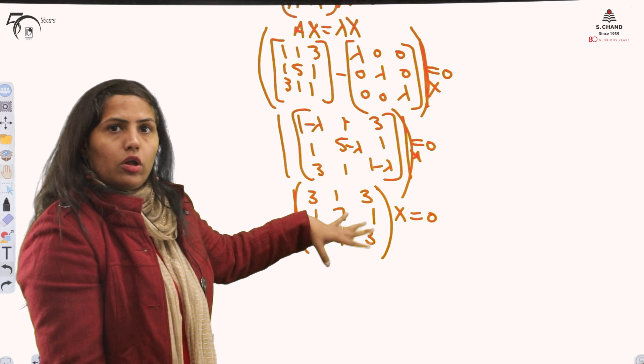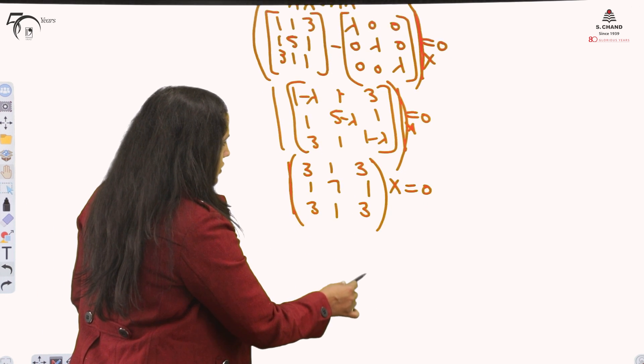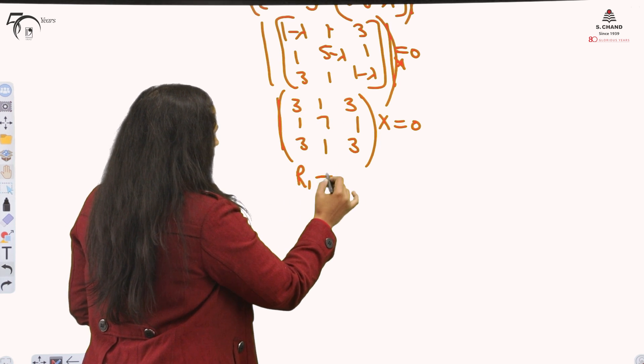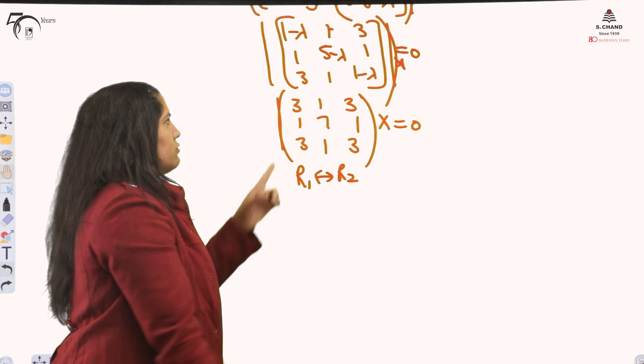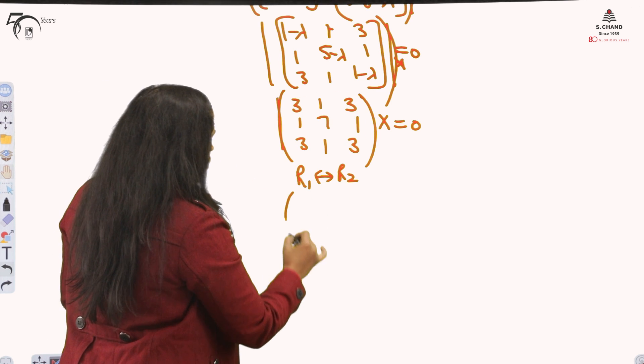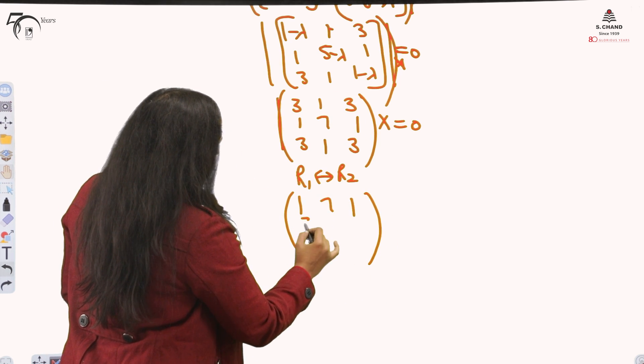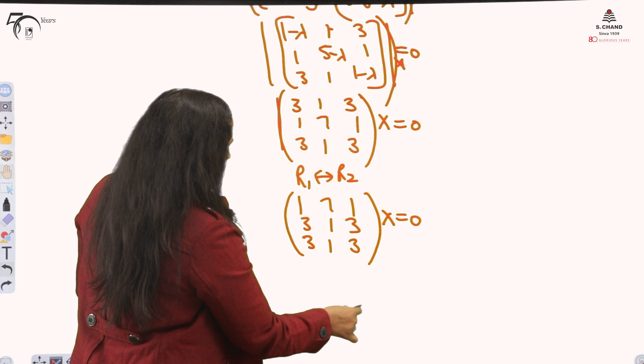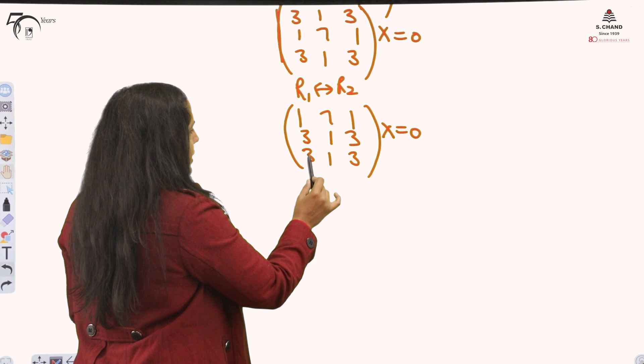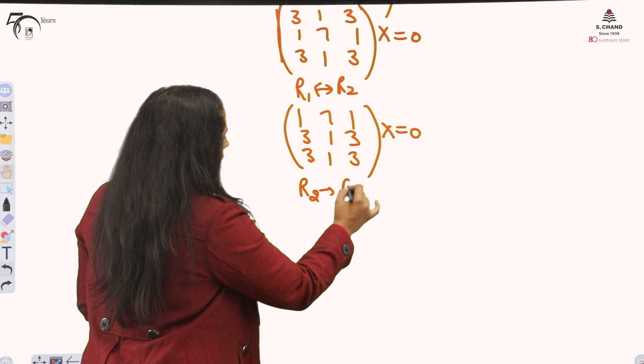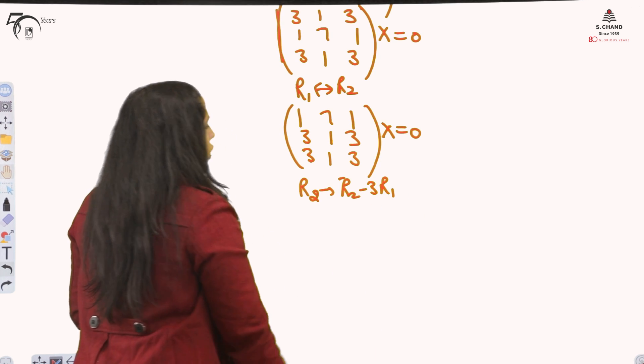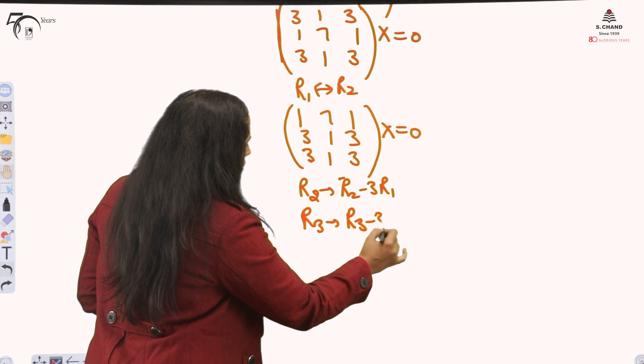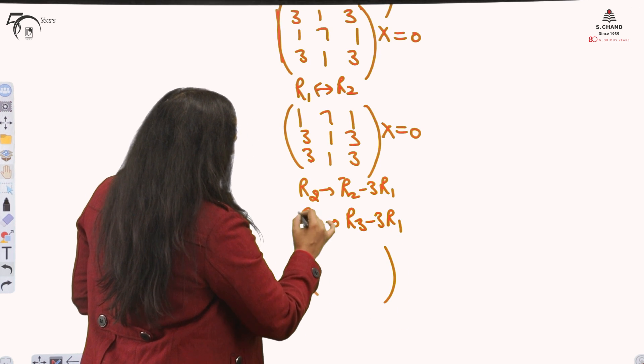Exactly the same way I will be solving the way I did in homogeneous equation solution. What I will do: I just exchange R1 and R2 because if the first element is 1, the calculation becomes simple. This element I will make 0. So R2 will go to R2 minus 3R1. R3, R3 minus 3R1.